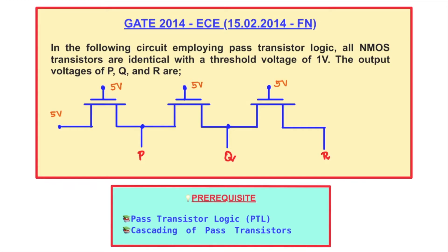The prerequisite for solving this problem is understanding pass transistor logic — a video link is given in the description box below. The second prerequisite is the cascading of pass transistors, which will be the main objective of this first part of the video. We can see here that three N-MOS pass transistors are cascaded one by one, subsequent to each other.